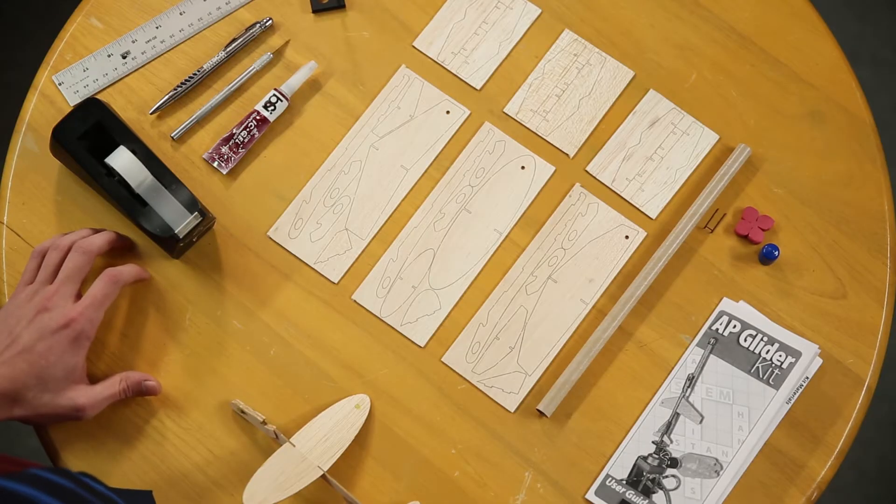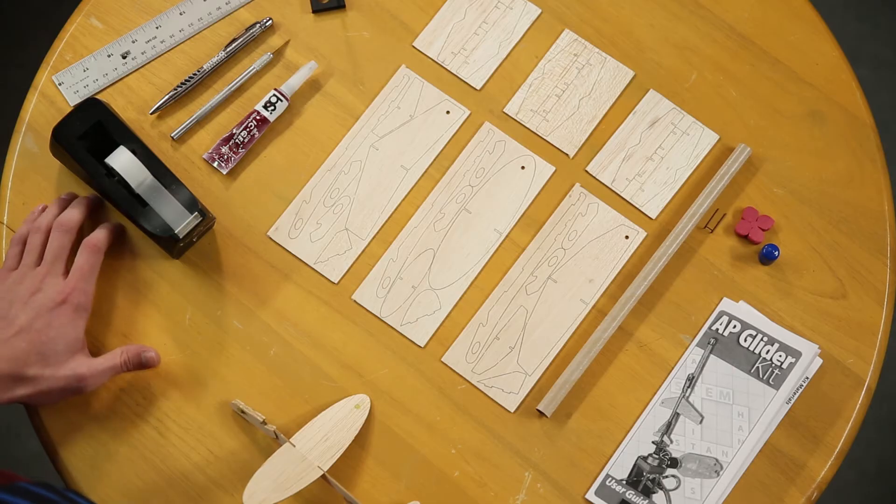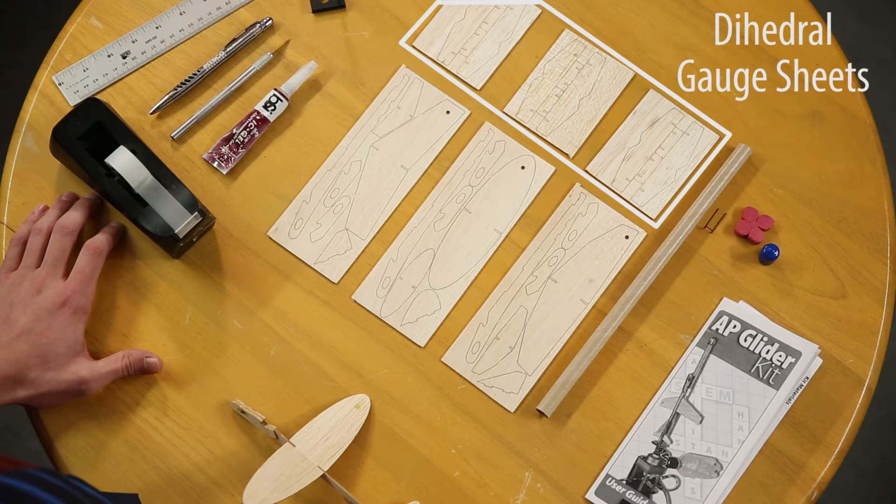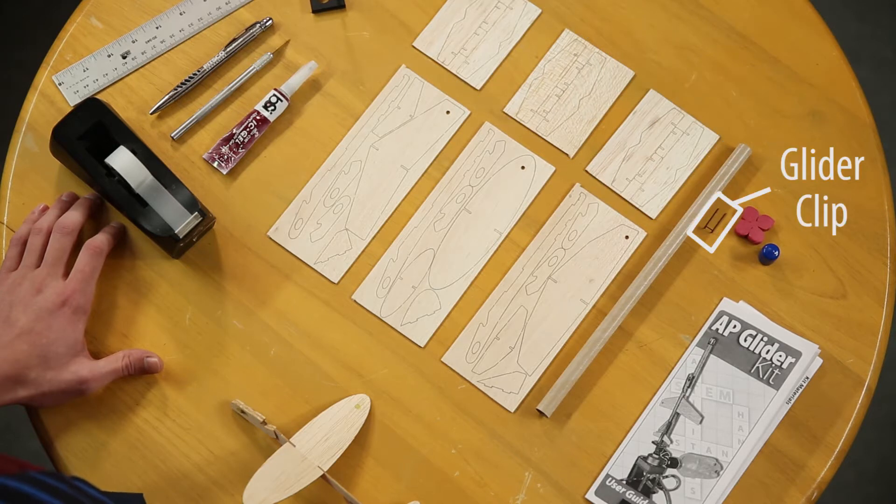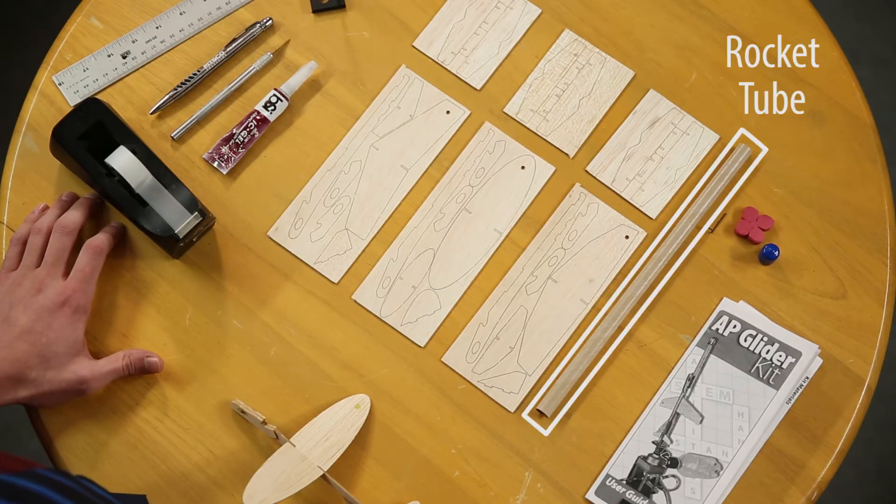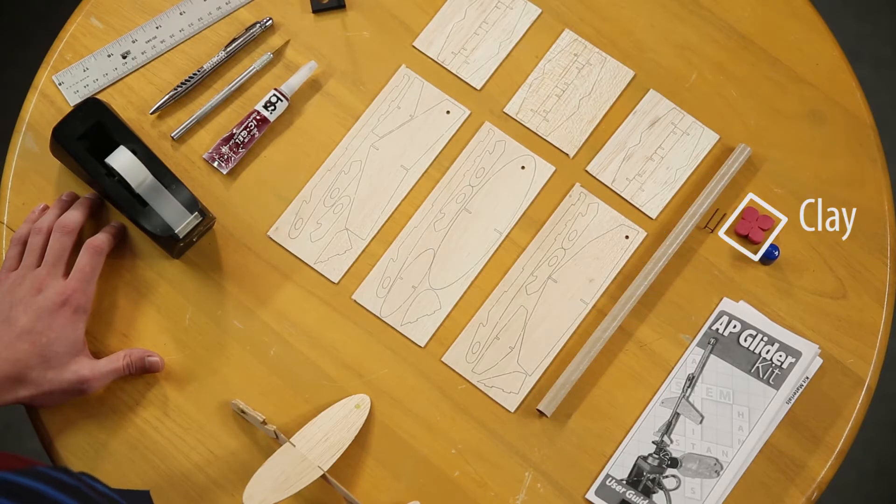Spread out on the table in front of me are all the parts that come in the AP Glider Kit. There are three sheets of laser-cut balsa wood parts for the winged dihedral gauge, a glider clip, three sheets of laser-cut balsa wood parts for gliders, a rocket cap, rocket tube, and clay.